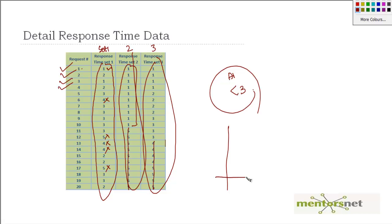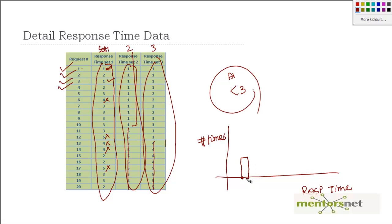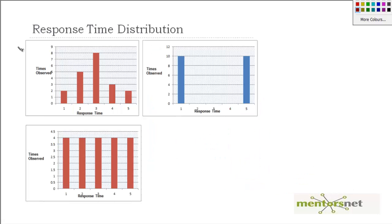Let's do a plot. In this plot, we are going to see how many times we observe a given response time. On the x-axis we have response time; on the y-axis, the number of times we observe that data point. In set 1, we observe response time 1 two times, response time 2 five times, and so on. If you plot all these things, you see the number of times you observe a particular response time. That distribution graph is going to look like this — this is your set 1, this is your set 2, and this is your set 3.